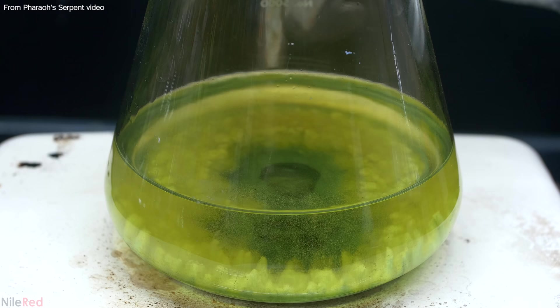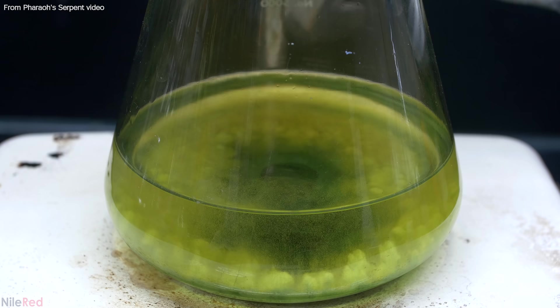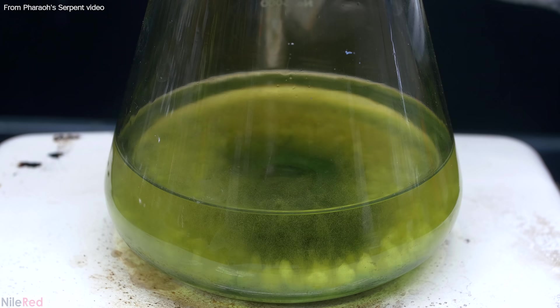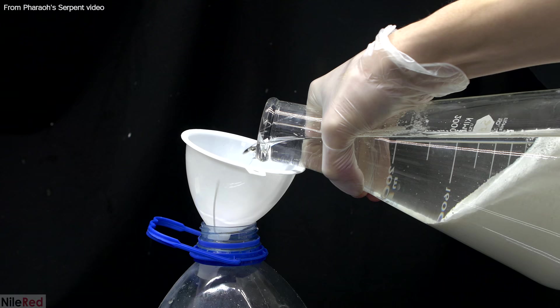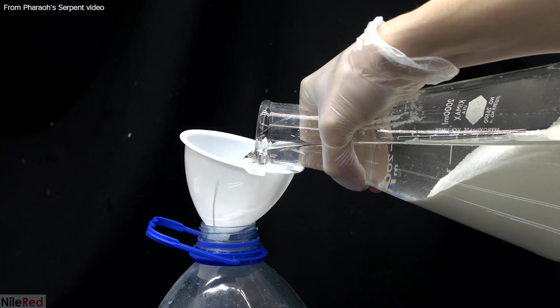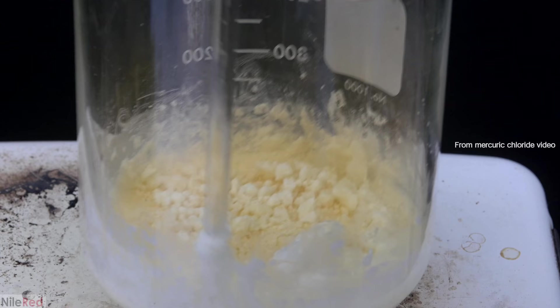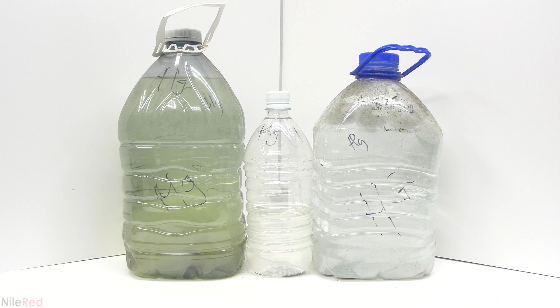For today's video, I'm going to be dealing with the water-based mercury waste that I've generated over the past couple years. A major source of the waste was from the updated Pharaoh Serpent video, but a couple other preparations also contributed to it. None of the waste can be poured down the drain, so I put everything into some 4 liter water bottles. The waste bottles were then stored in a larger plastic container, just in case any leaks occurred.